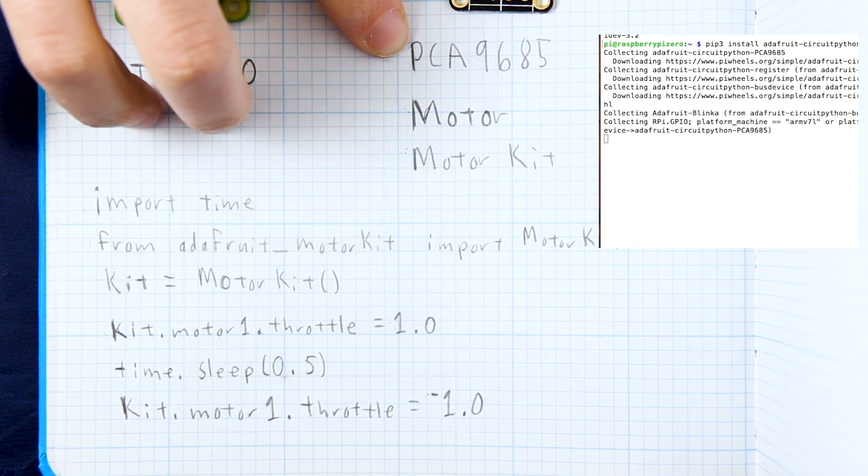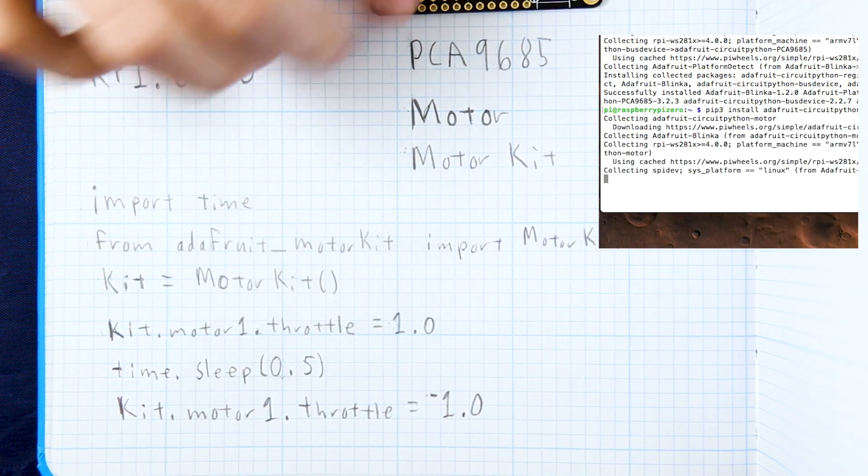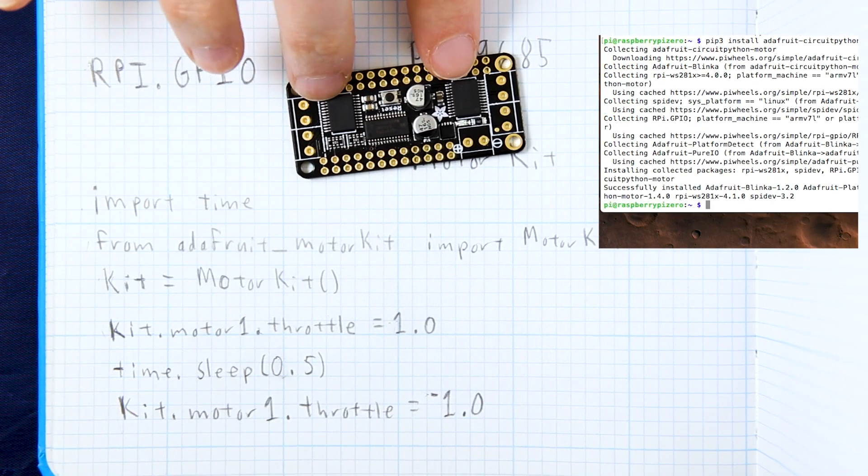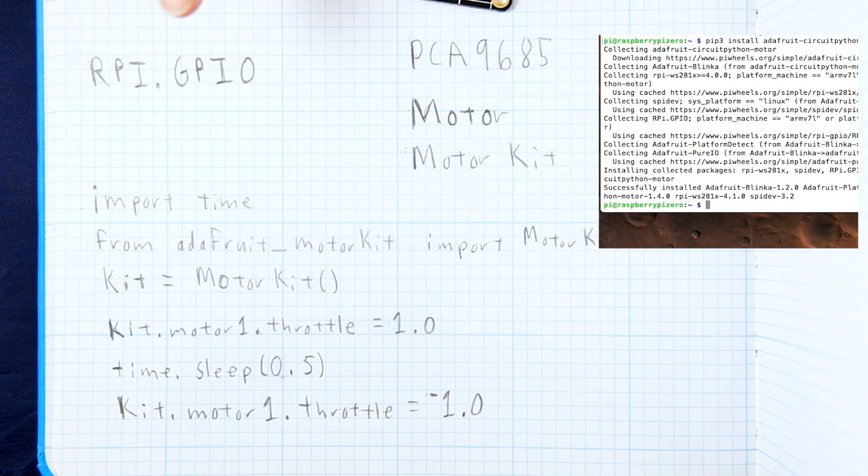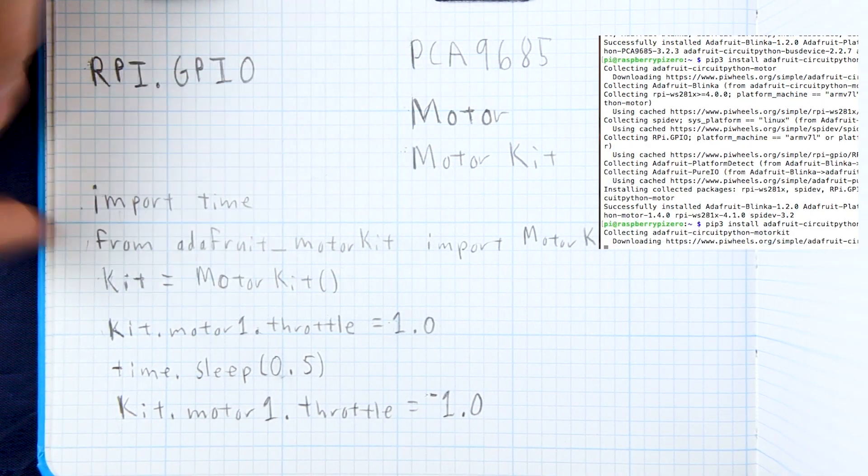And then we need to install these three CircuitPython libraries. This PCA one is the one that talks to the PWM controller. The motor library helps this library talk to these two chips on the side, the TB chips. And then the motor kit library is just going to make it a lot easier for us to write the code.